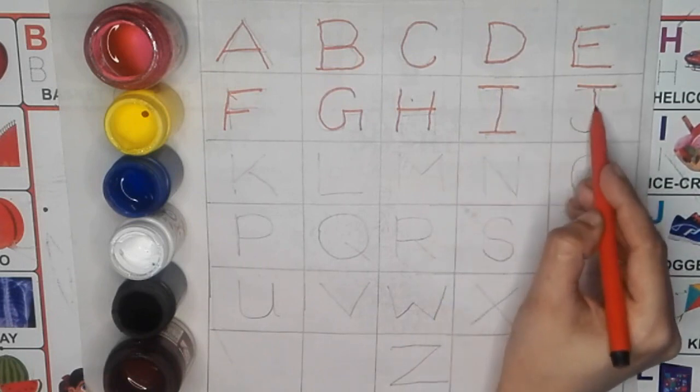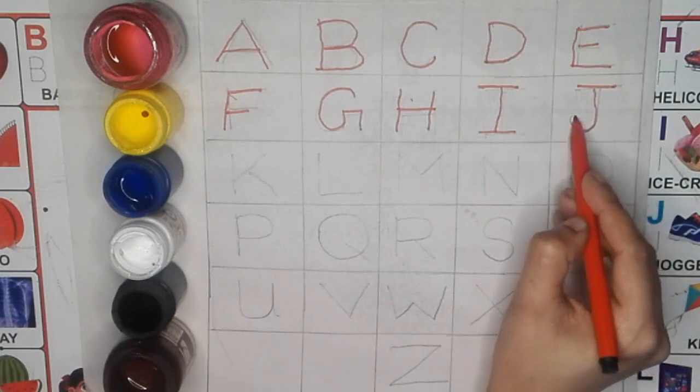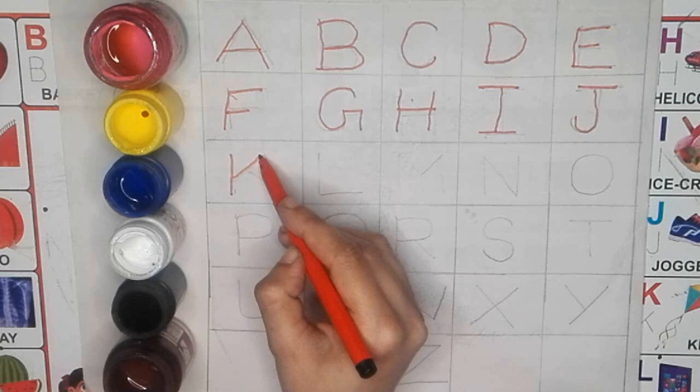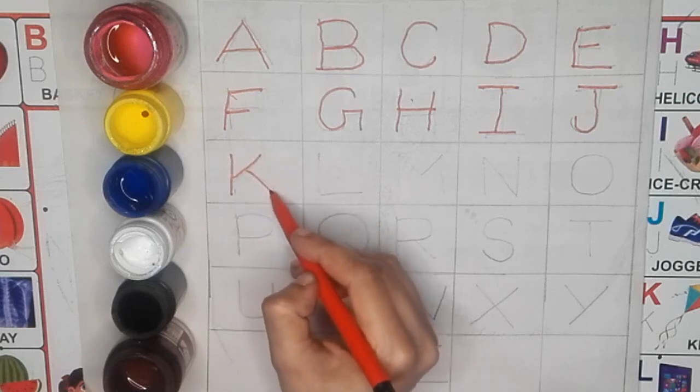J, J for joker, J for joker. K, K for kite, K for kite.